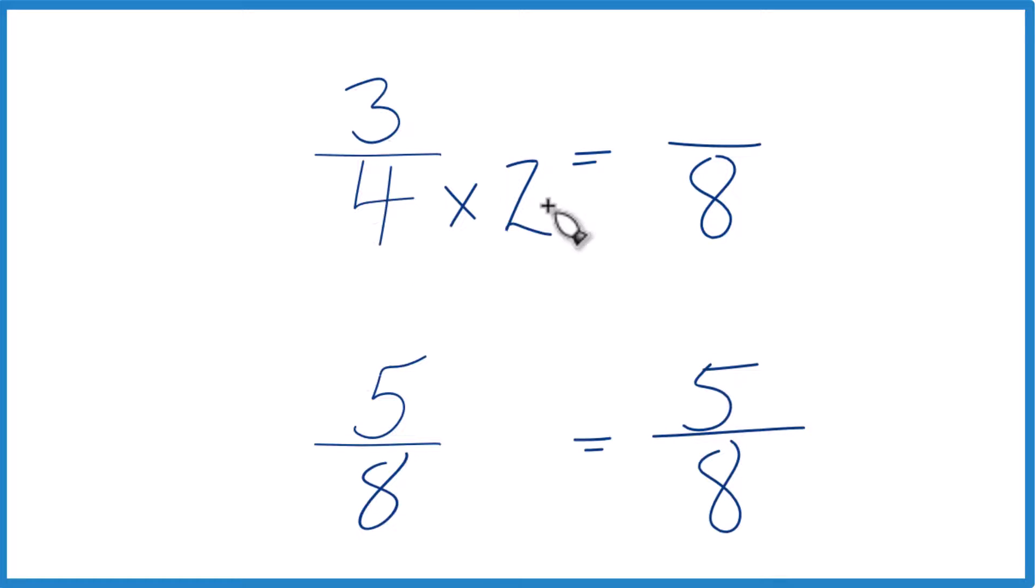But up here we multiply the denominator by two. That means we really do need to multiply the numerator by two as well. Two over two is just one, so we're multiplying by one. We don't change the value, just the way it's represented.